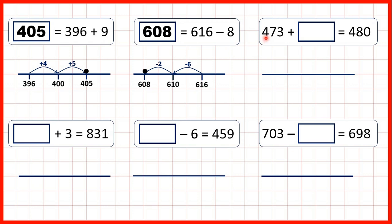So now, we have 473 plus something equals 480. Here we've got a missing number addition. When we have a missing number addition, one way to solve it is to subtract.